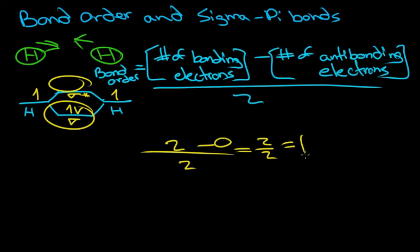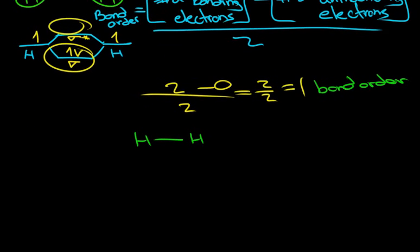So there's something interesting about this. Before we get into it, let's say one is the bond order. Let's draw the Lewis structure for hydrogen. Hydrogen, hydrogen, we have a single bond. Now, we have a single bond, and we have one bond order.